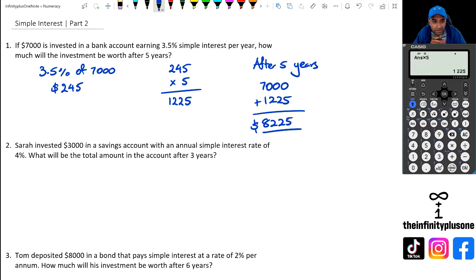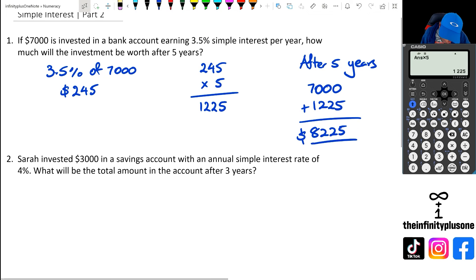Question two, we're looking at Sarah invested 3,000 at a simple interest rate of 4%. What will be the total amount after three years? So we've got 4% of 3,000 first. So I'm going to go 4 divided by 100 and multiply it by 3,000, which gives me $120.